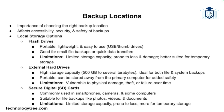Choosing the right backup location is essential, as it determines how accessible, secure, and safe your backups will be. Local storage options are physical devices where you can store your backups close at hand. Flash drives — also called USB drives or thumb drives — are small, lightweight, and easy to use. They're great for small file backups or quick data transfers; however, they have limited storage capacity and are prone to loss or damage, making them better for temporary backups.